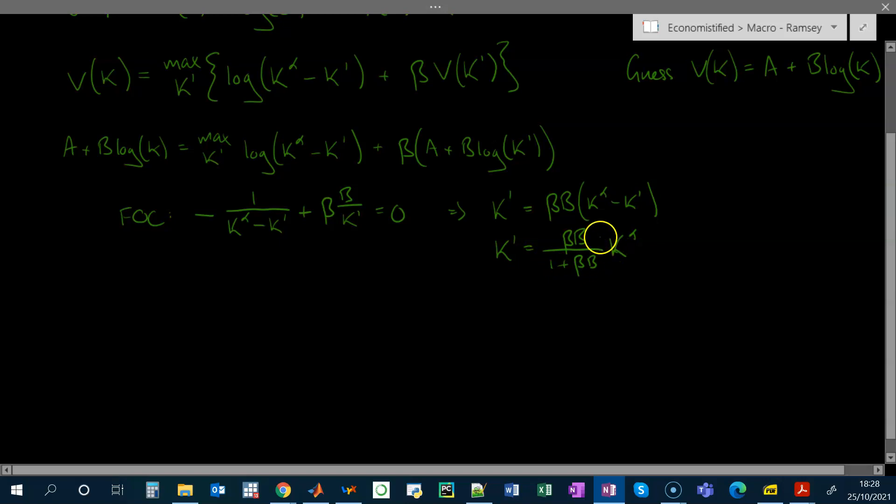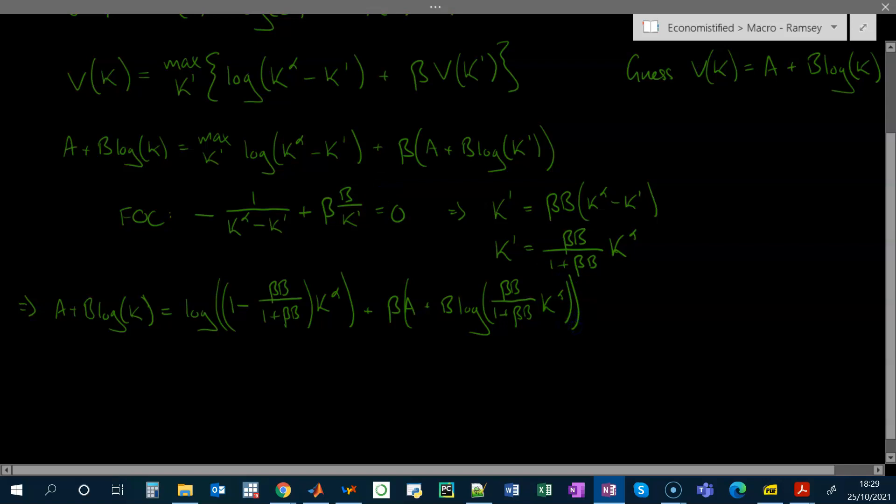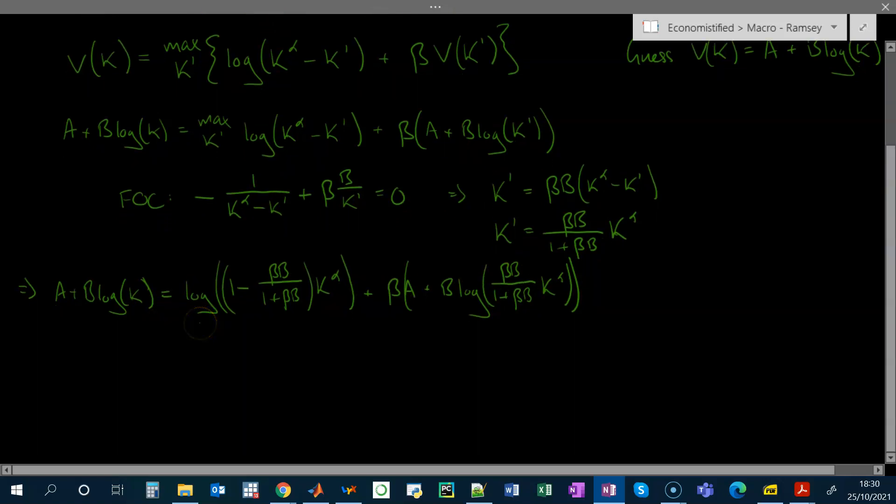So now to verify the guess, we just plug in this optimal choice of k prime into the Bellman equation. Now you should be able to tell already that these two sides are in fact of the same functional form, a constant plus something proportional to log k.